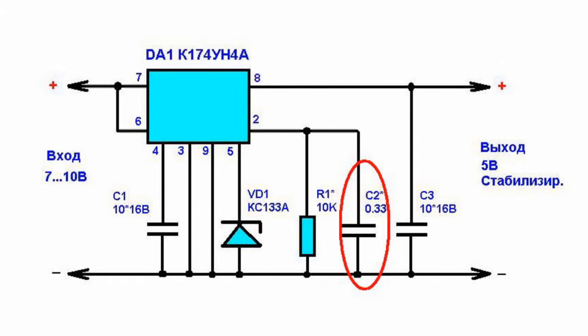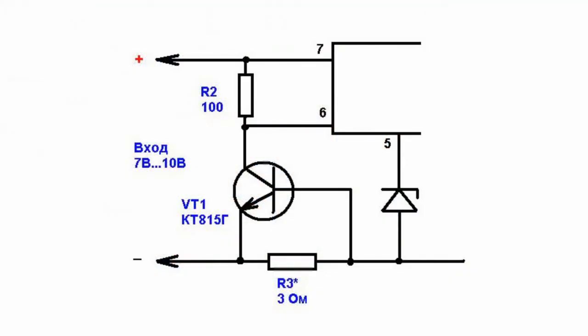You can increase the output voltage produced by K174UN4 voltage regulator by adding a powerful transistor and two resistors to create the over-current protection system. The maximum load current triggering the protection system is set by selecting the rated value of wire resistor R3.